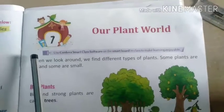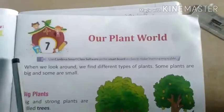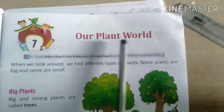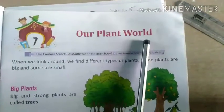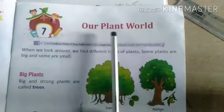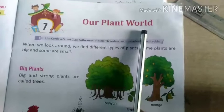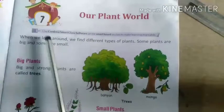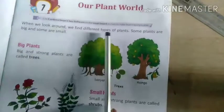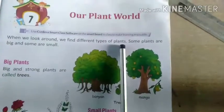First, we are going to learn lesson number 7, Our Plant World. What is the name of the lesson? Our Plant World. When we look around, we find different types of plants.